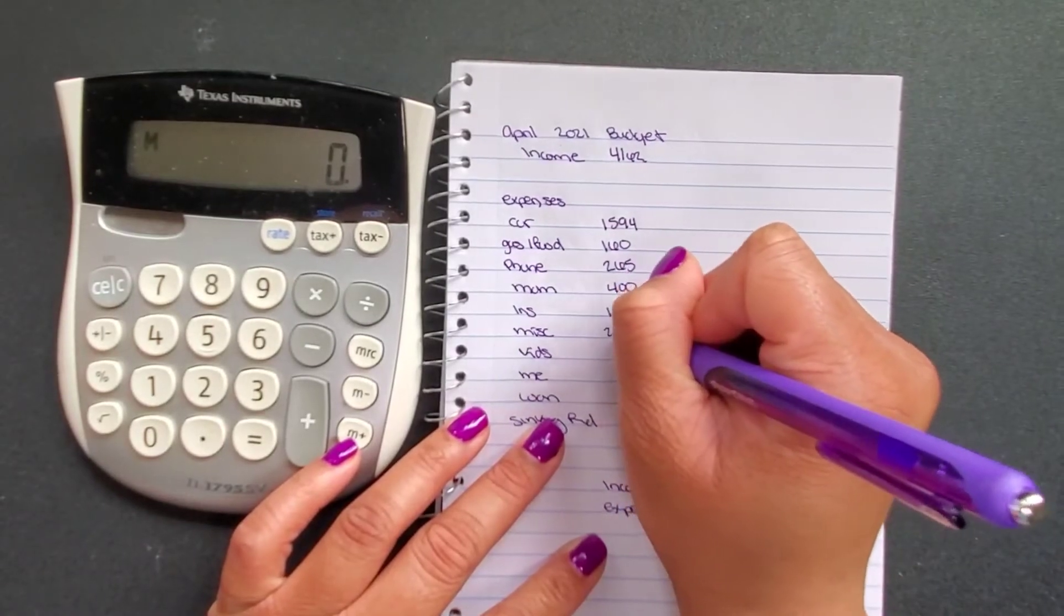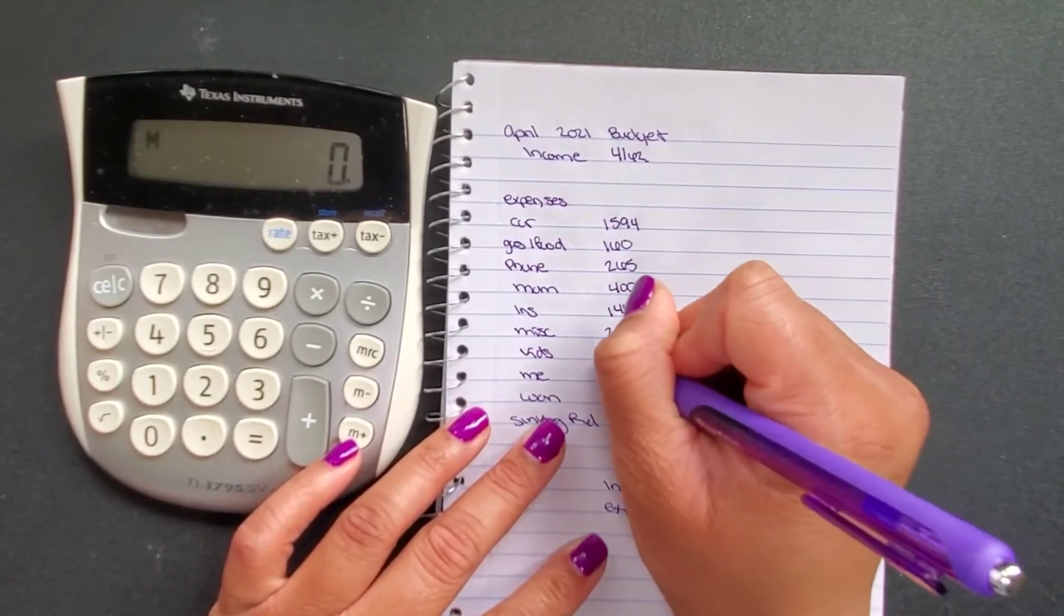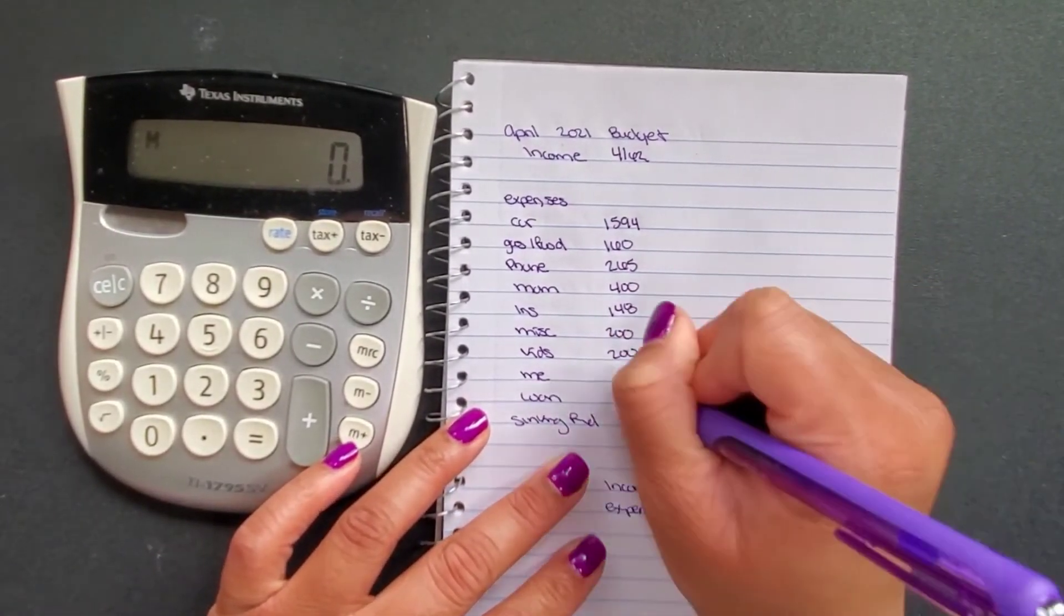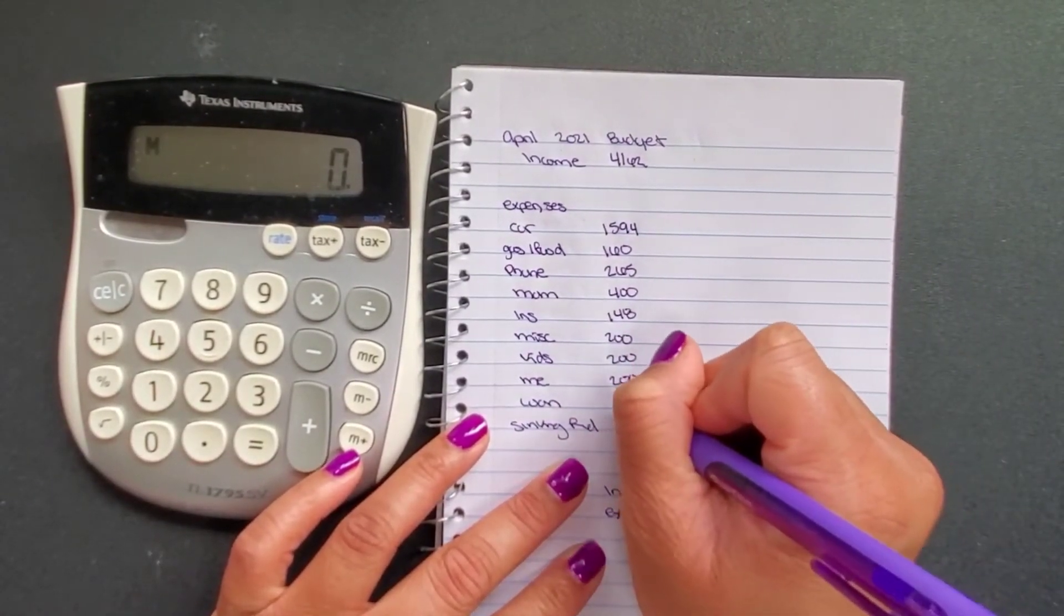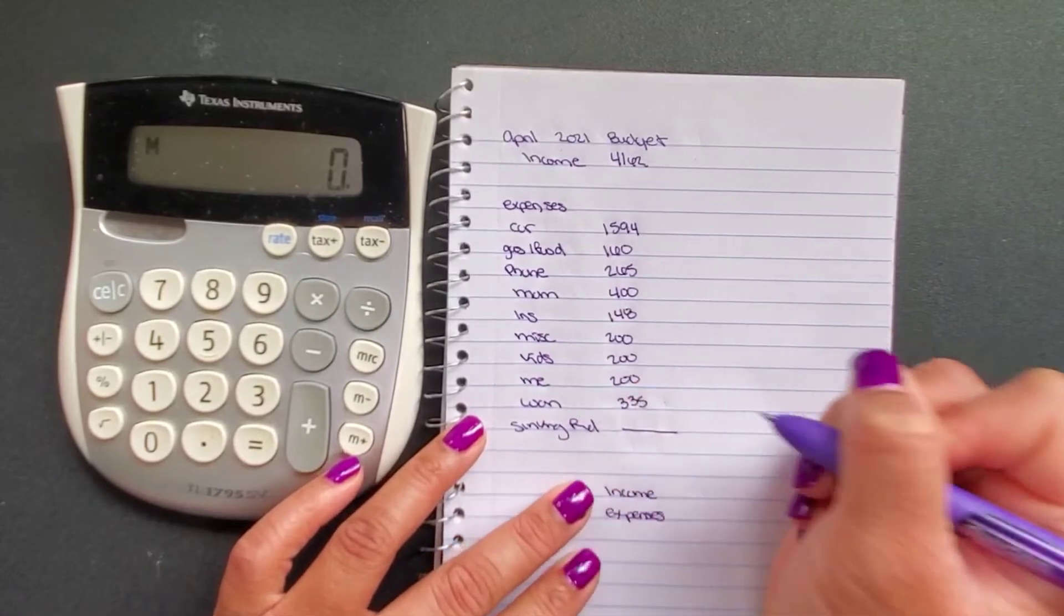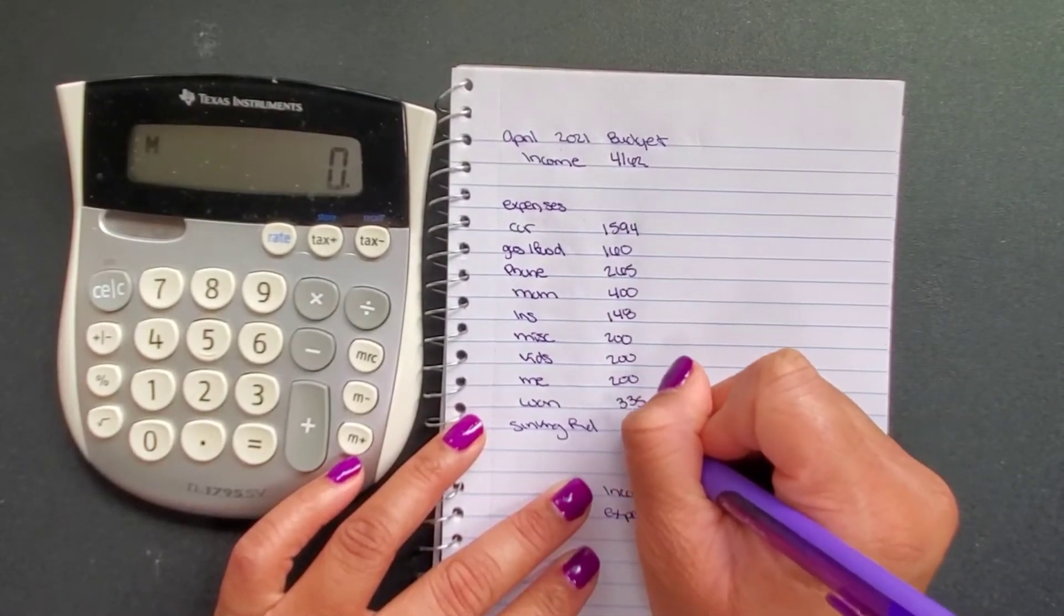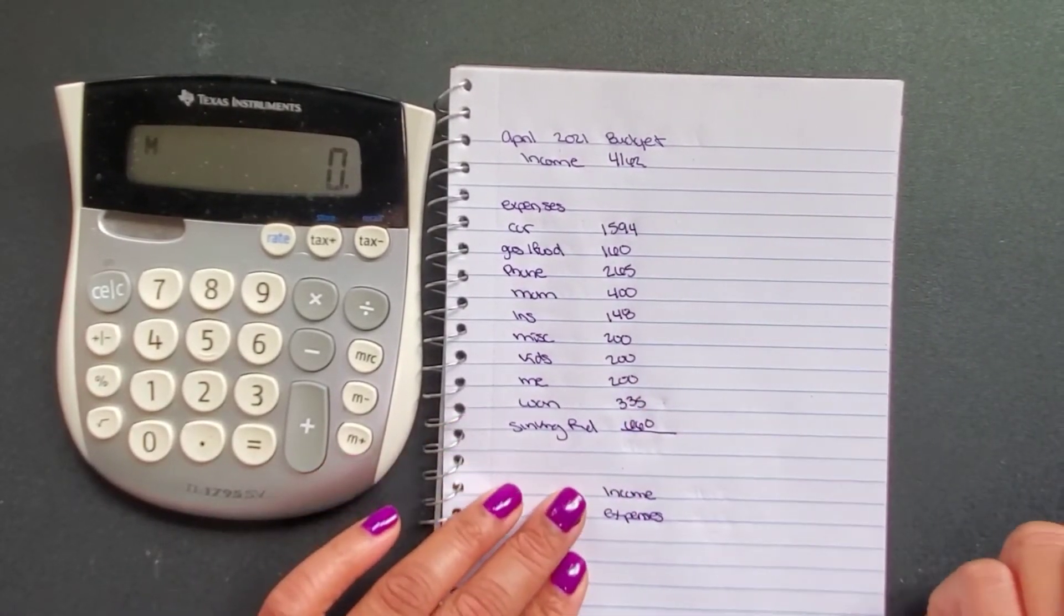Miscellaneous will get $200. Kids get $200, $200 for myself, $335 for my loan and $660 for my sinking funds.